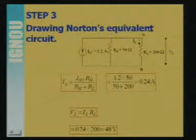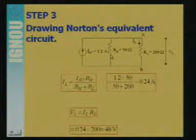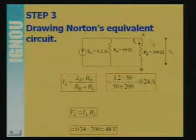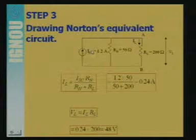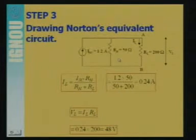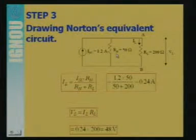The Norton equivalent circuit has one current source and one parallel resistance. We have found ISC as 1.2 ampere and the value of Rth. Just connect RL at terminal AB. We have converted the whole complicated network into a Norton equivalent circuit with one current source and one equivalent resistance. In step 1 we found ISC, and in step 2 we found the equivalent resistance.